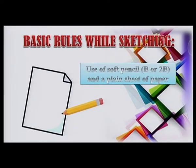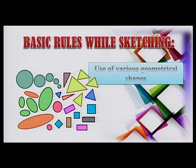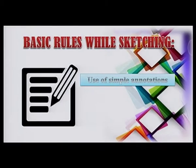There is no single method for sketching, but at your level it is good to observe certain basic rules, such as using a soft pencil and a plain sheet of paper. Use various basic geometrical shapes such as squares, rectangles, circles, and so on. Use simple annotations to highlight main information — for example, materials to be used, manufacturing techniques, finish to be applied, different elements in the design, and so on.